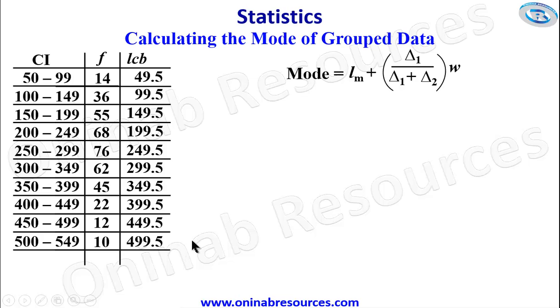So having gotten this, we then go ahead to identify the modal class. The modal class will be obtained via the frequency column by identifying the highest frequency. And the highest frequency here is 76. So the class interval corresponding to it will give us the modal class interval. So this is the modal class interval. It is very obvious now that our LM is 249.5.